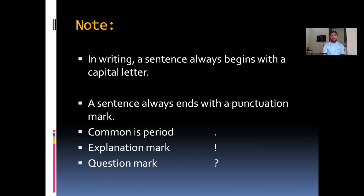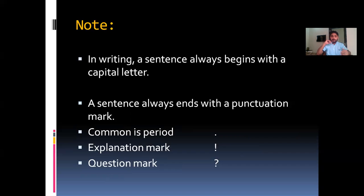In writing, a sentence always begins with a capital letter. Most of my cadets commit the same mistake — they start sentences with a small letter, which is wrong. You always have to start your sentence with a capital letter, and even after a period you must start the next sentence with a capital letter. That is a hard and fast rule. A sentence always ends with a punctuation mark — that may be a full stop, an exclamation mark, or a question mark.